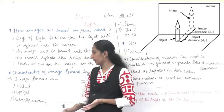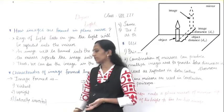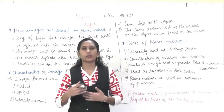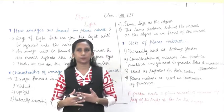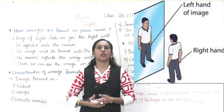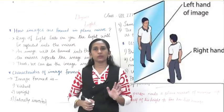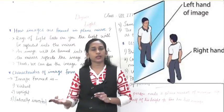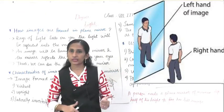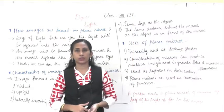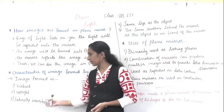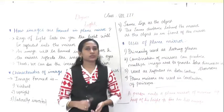A straight image is formed, and it is laterally inverted — meaning there is lateral inversion in the image. Your left hand will be seen as the right hand, and your right hand will be seen as the left hand in the mirror. That is why it is called a laterally inverted image.